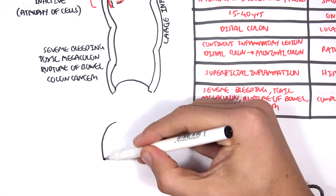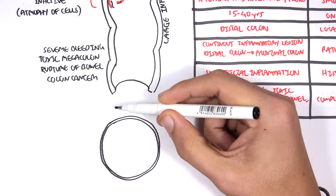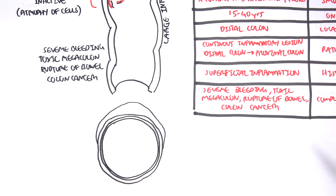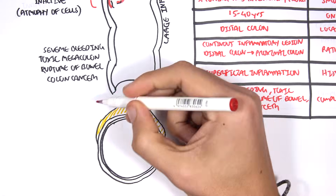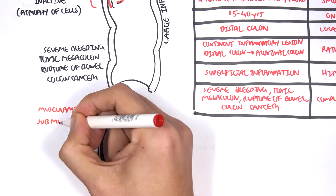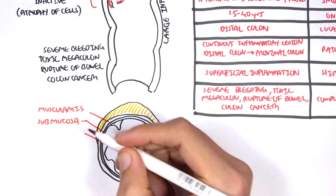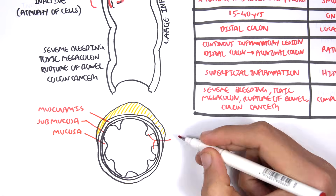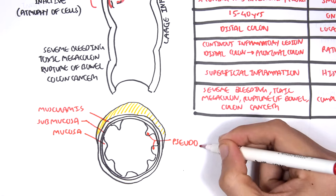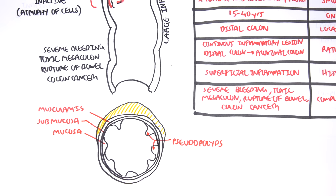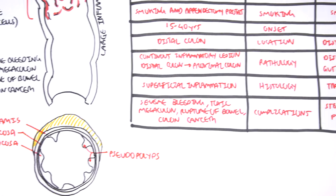If we take a cross-section of the large intestine, we can see the histological layers: the muscularis, the submucosa, and the mucosa. You can also see pseudopolyps, which are a characteristic feature of ulcerative colitis. Pseudopolyps arise because the cells of the colon are trying to regenerate, but they regenerate abnormally, causing these polyps.